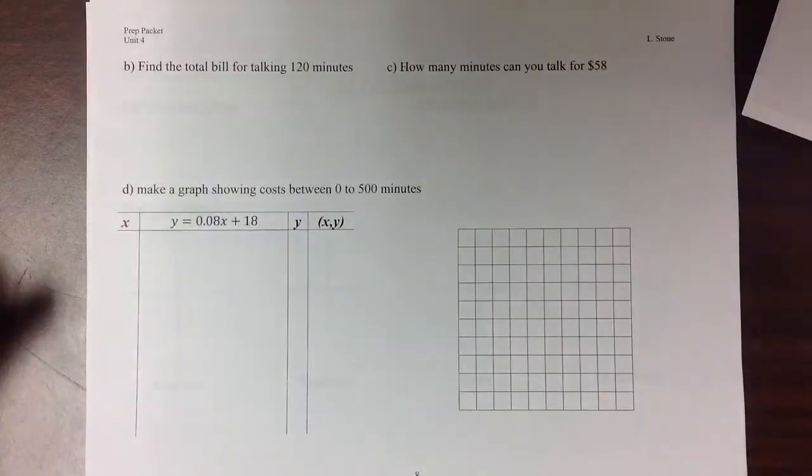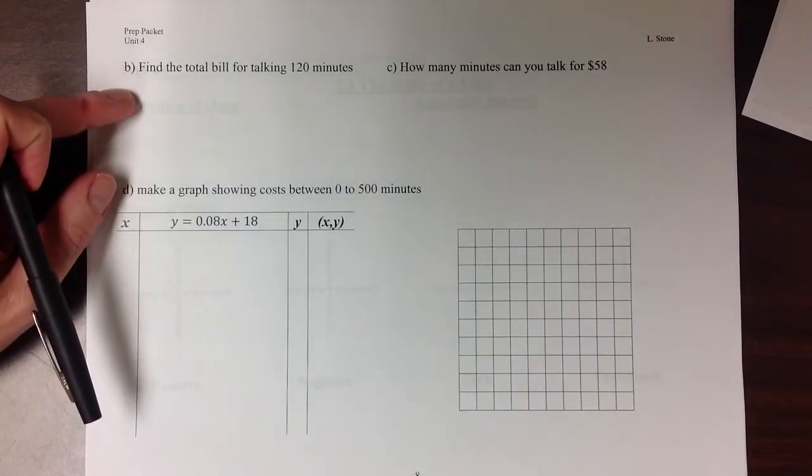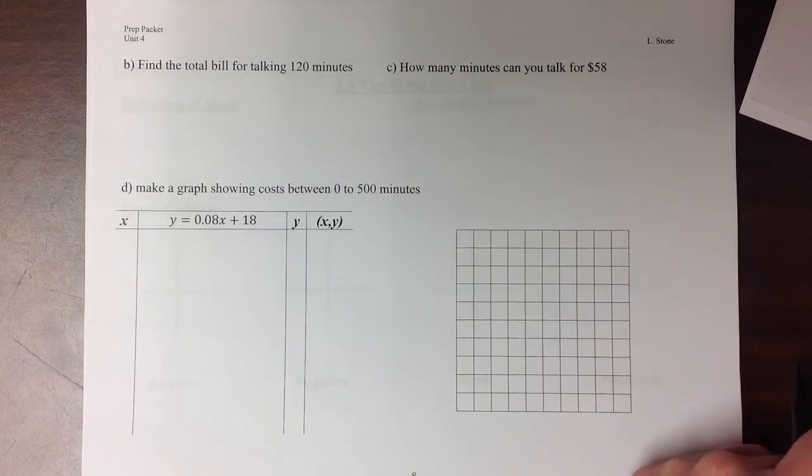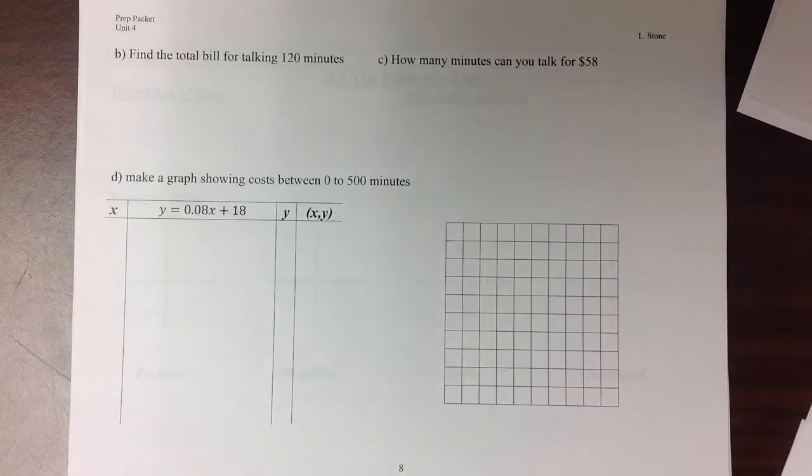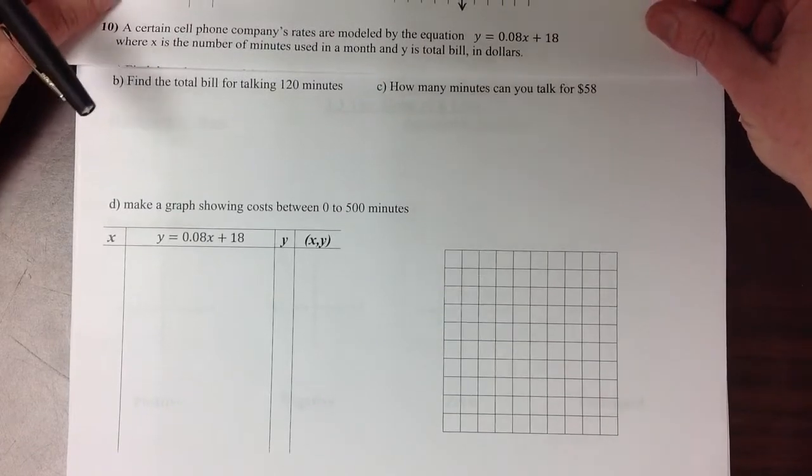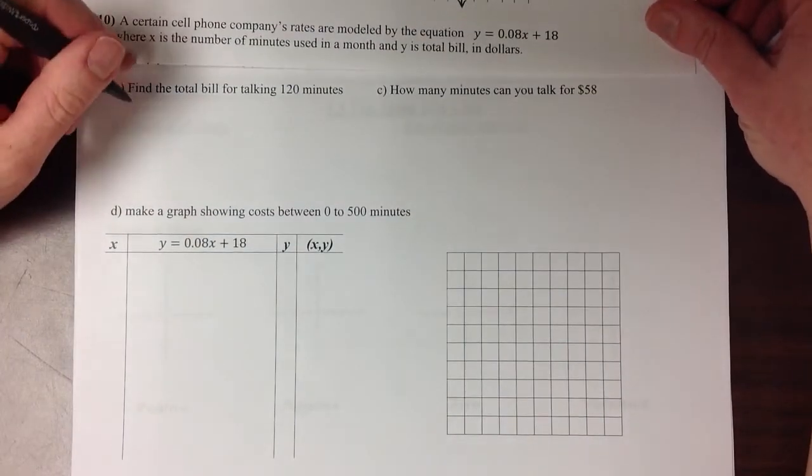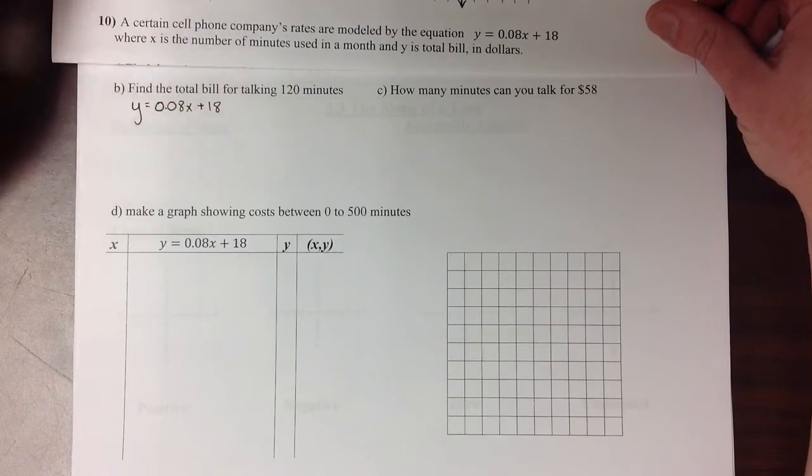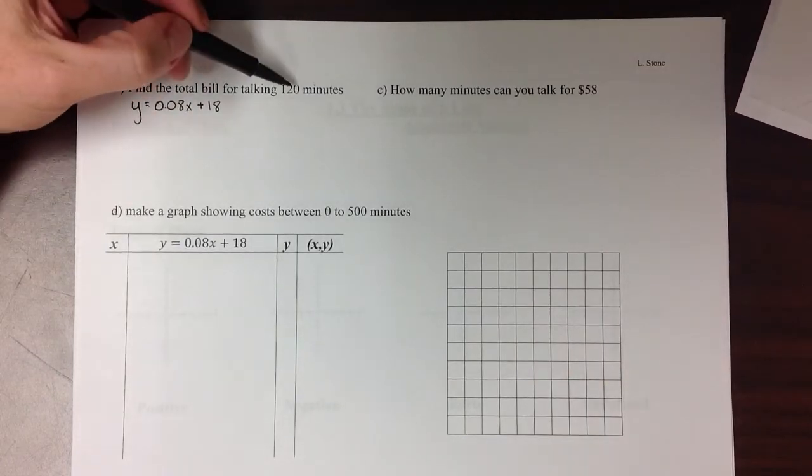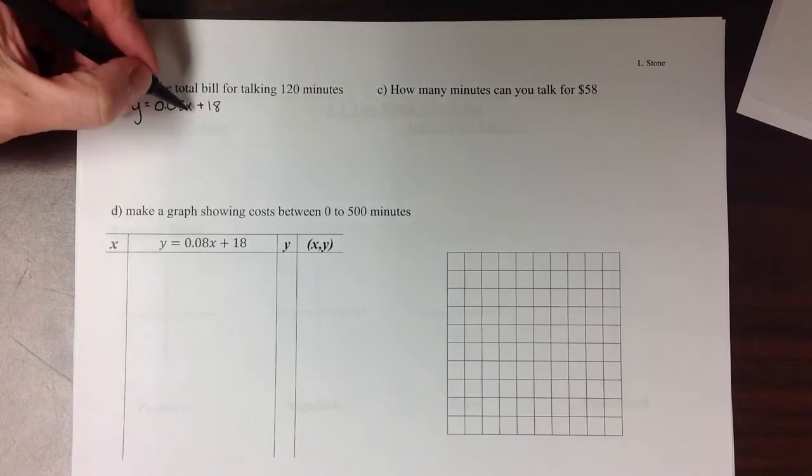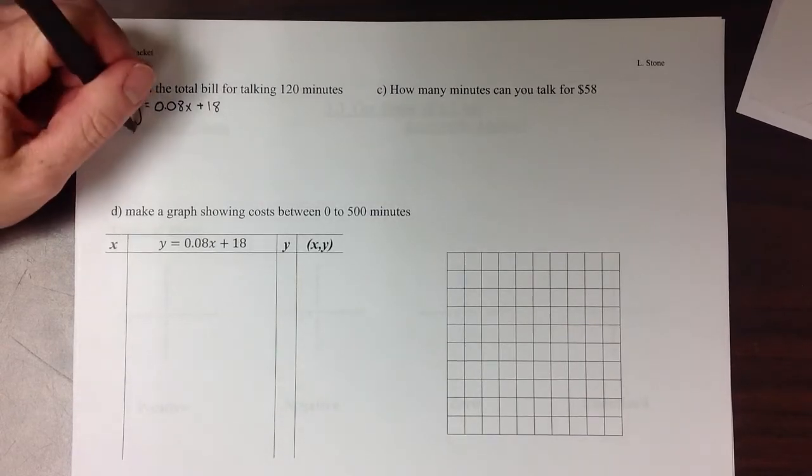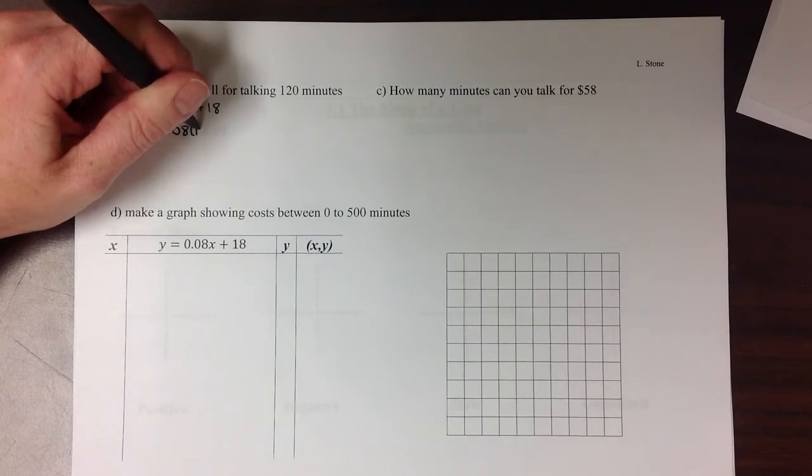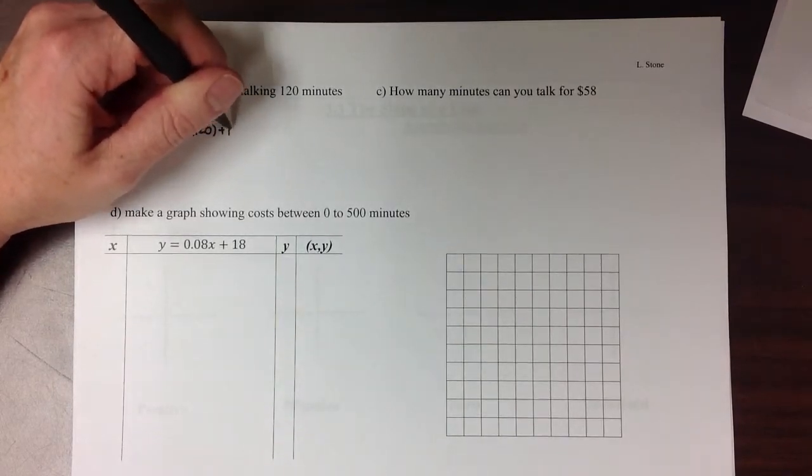The second part of this problem says, find the total bill if you talk for 120 minutes. So we'll keep the first part of this paper here where we can see it. Our equation again was y equals 0.08x plus 18. And they want us to do it for talking 120 minutes, while our x stands for the number of minutes that we spend on the phone.